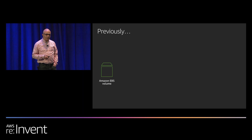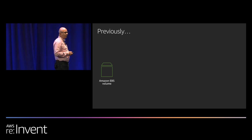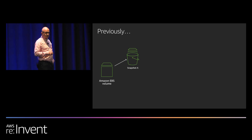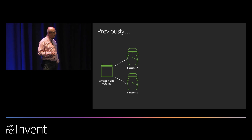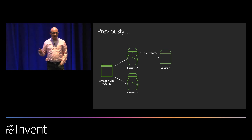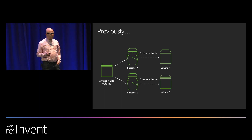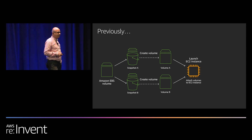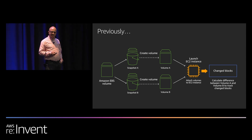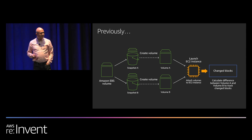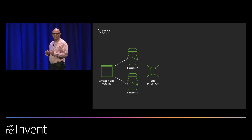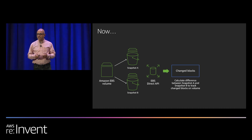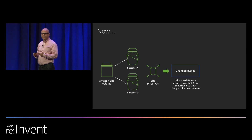One key example use case for direct read: tracking changes in a volume. Previously, to find what changed between snapshot A and snapshot B, you'd have to restore both snapshots fully into volumes, do a full scan on each, attach both to an EC2 instance, and figure out what changed. Now it's a single API call — you identify snapshot A, snapshot B, and get the diffs directly. No EBS volumes, no EC2 instance needed.